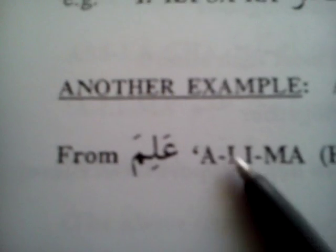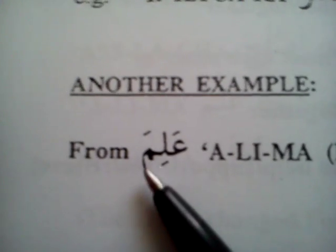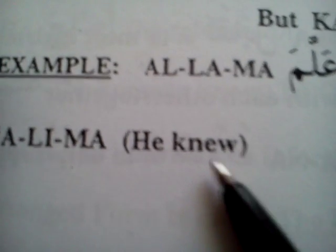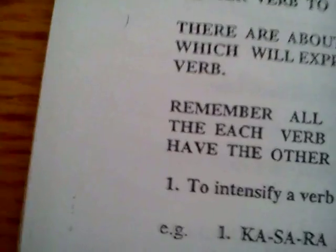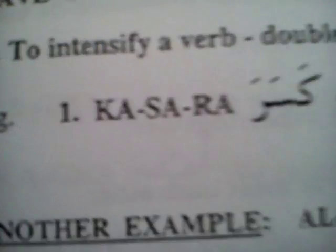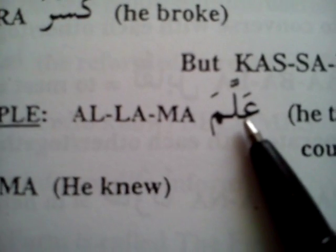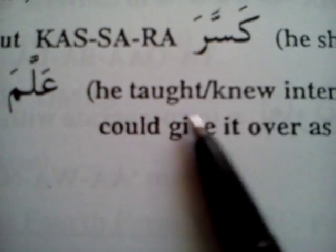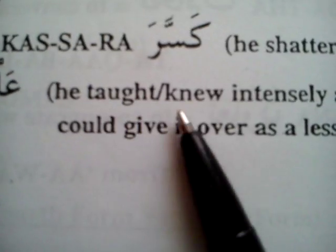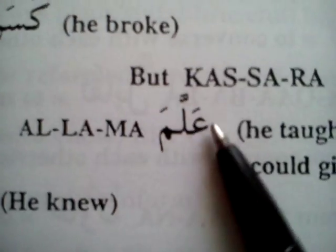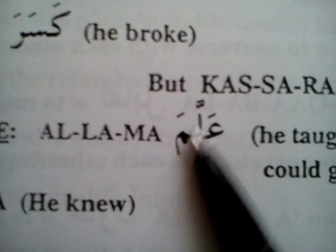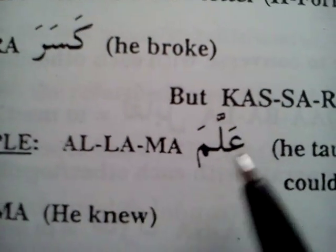Let's look at another example. Alima means 'he knew.' But if you use the word alima — doubling the middle one — it becomes allama, meaning 'he taught.' He didn't only know, but he taught it intensively.